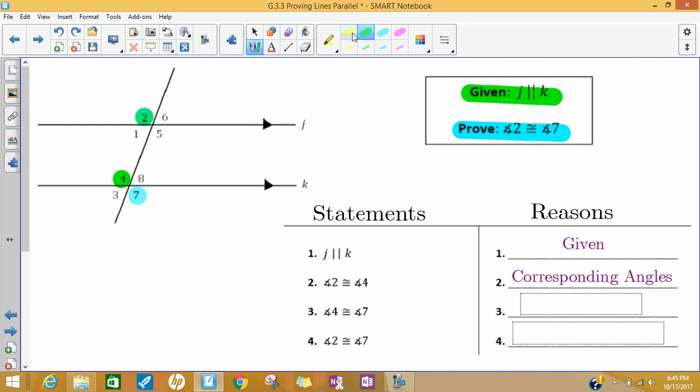Then we say that angle 4 and angle 7 are congruent. Well, those two angles are vertical angles, and we know that vertical angles are congruent. So that's our justification there.